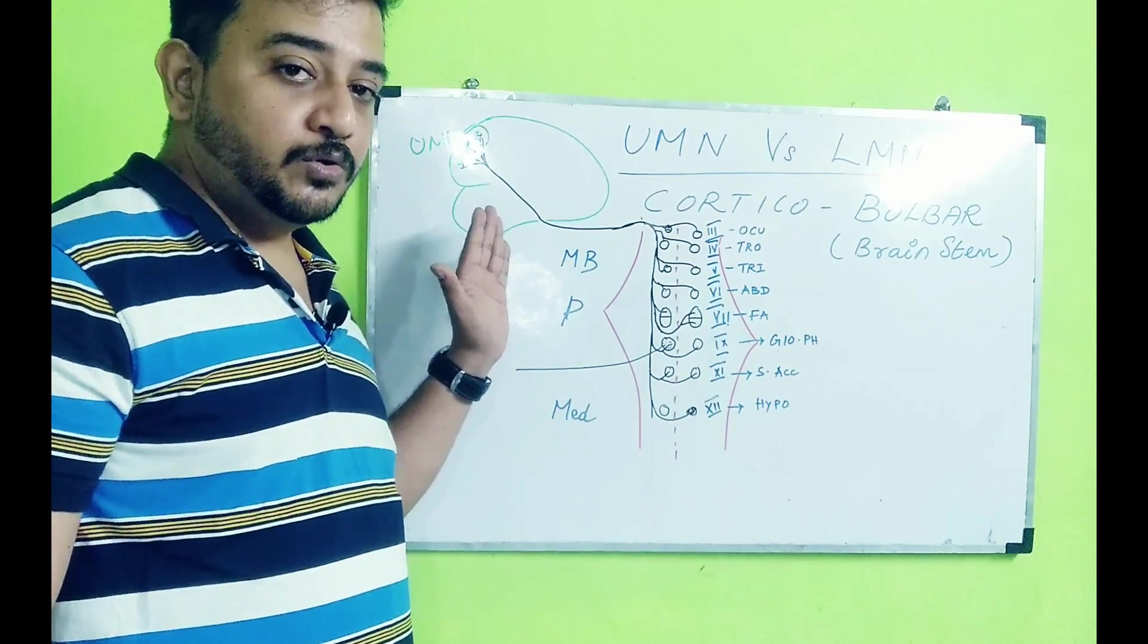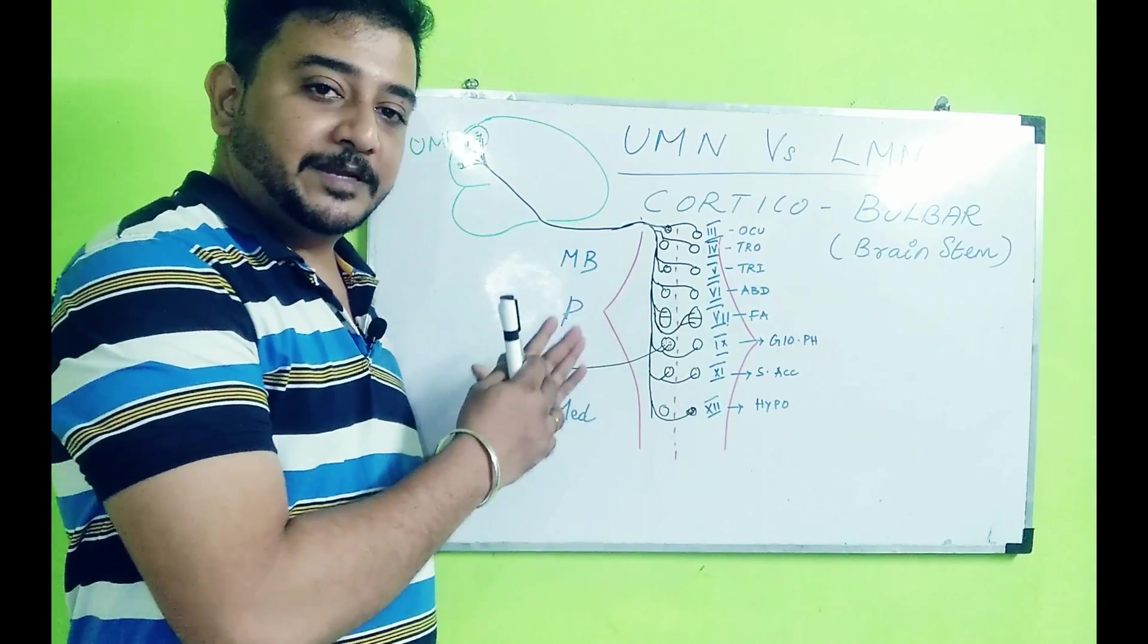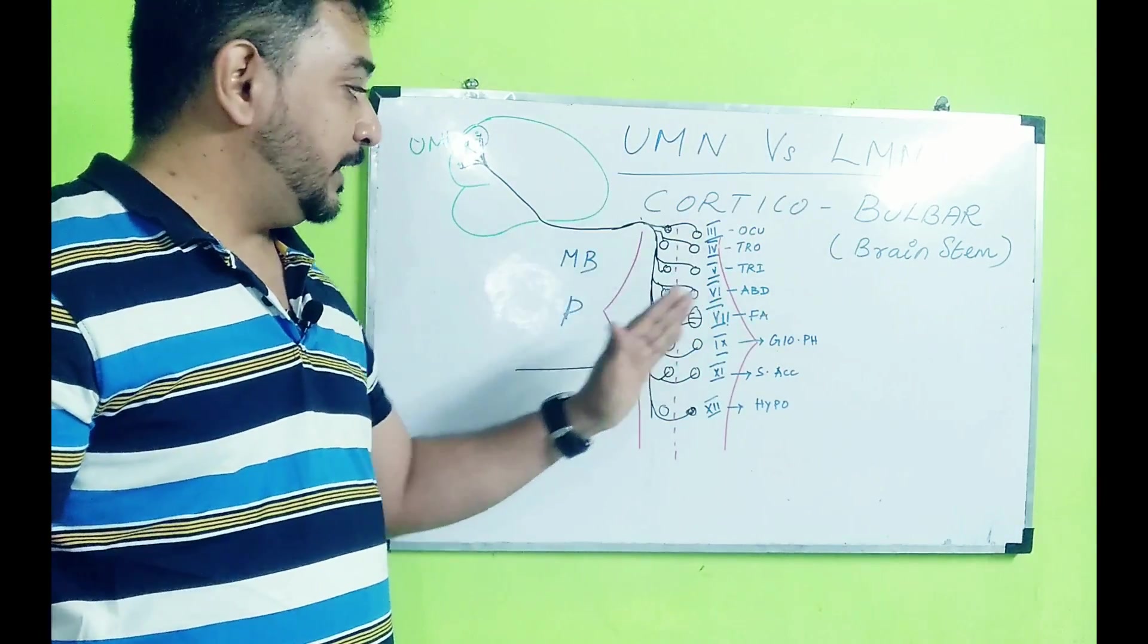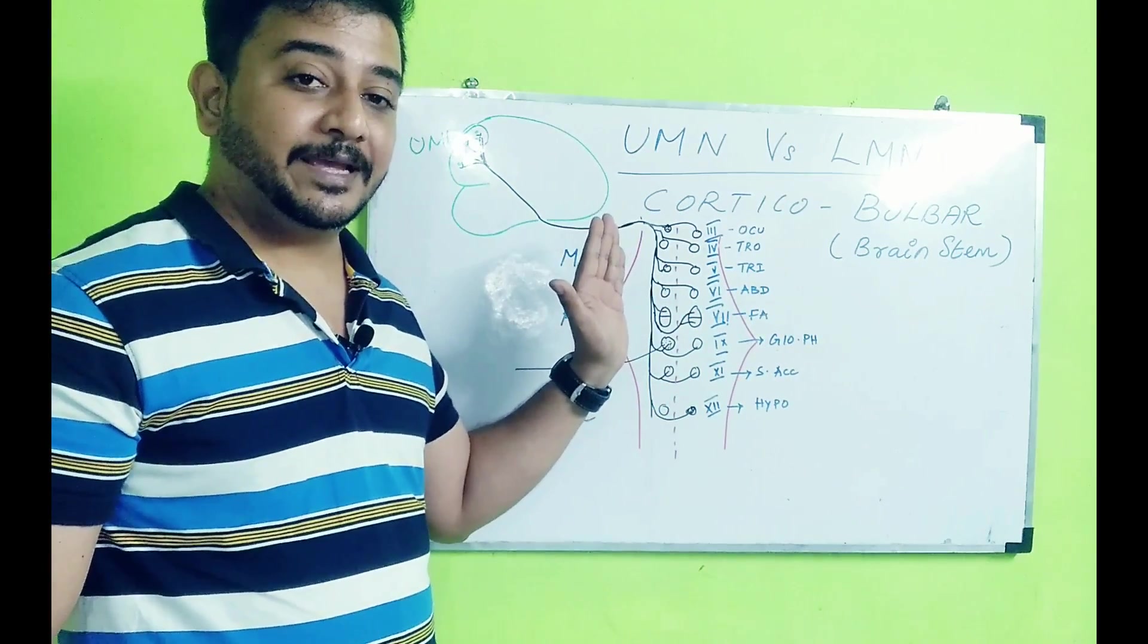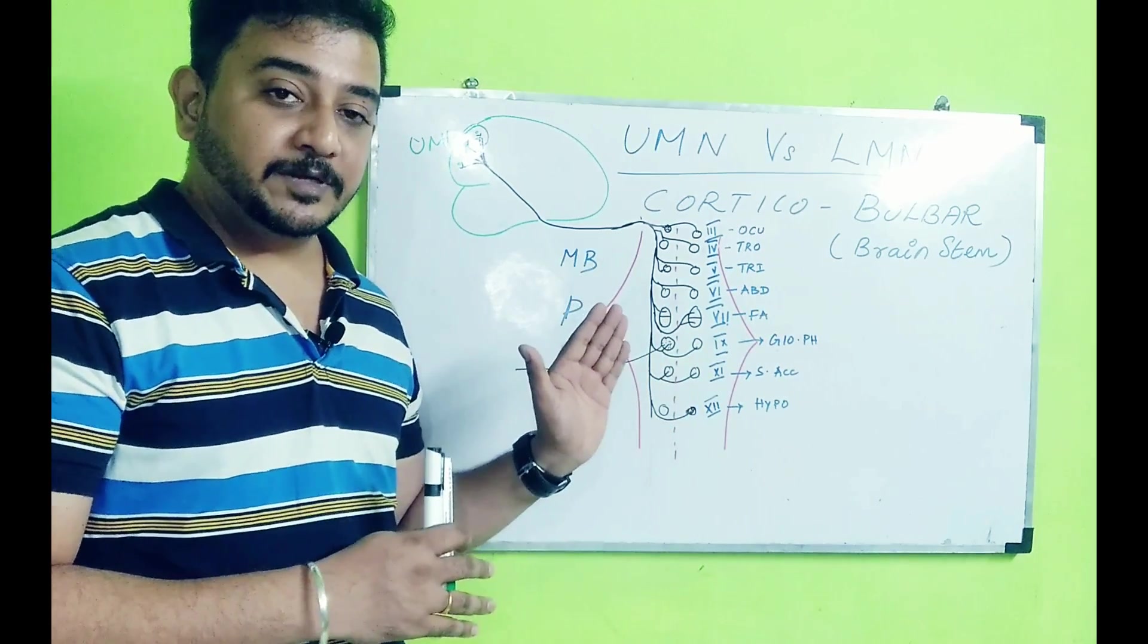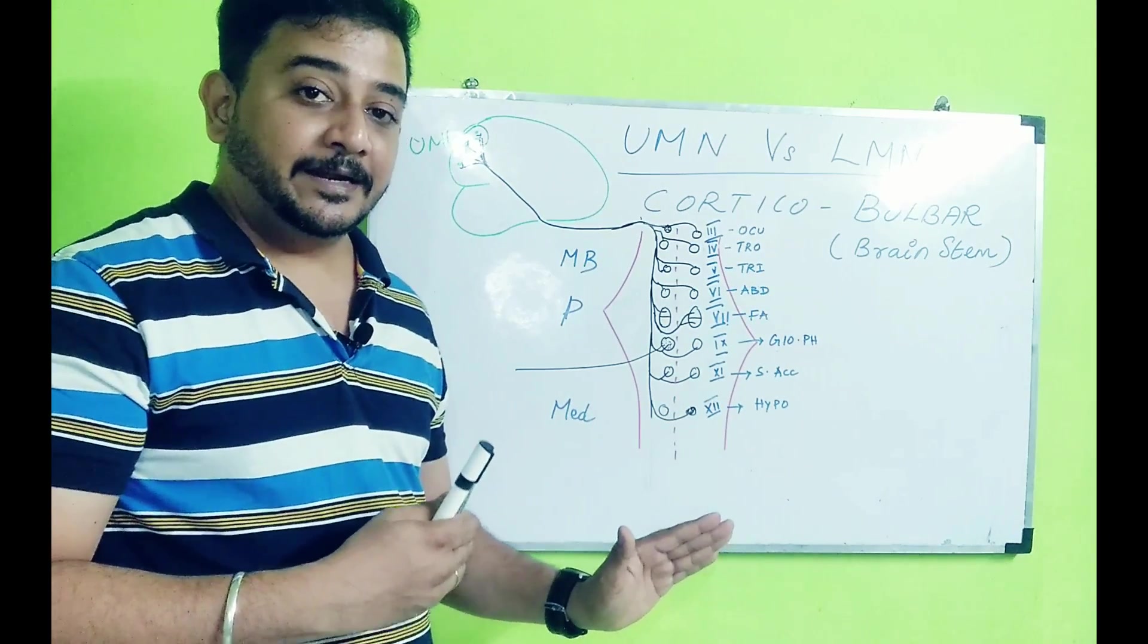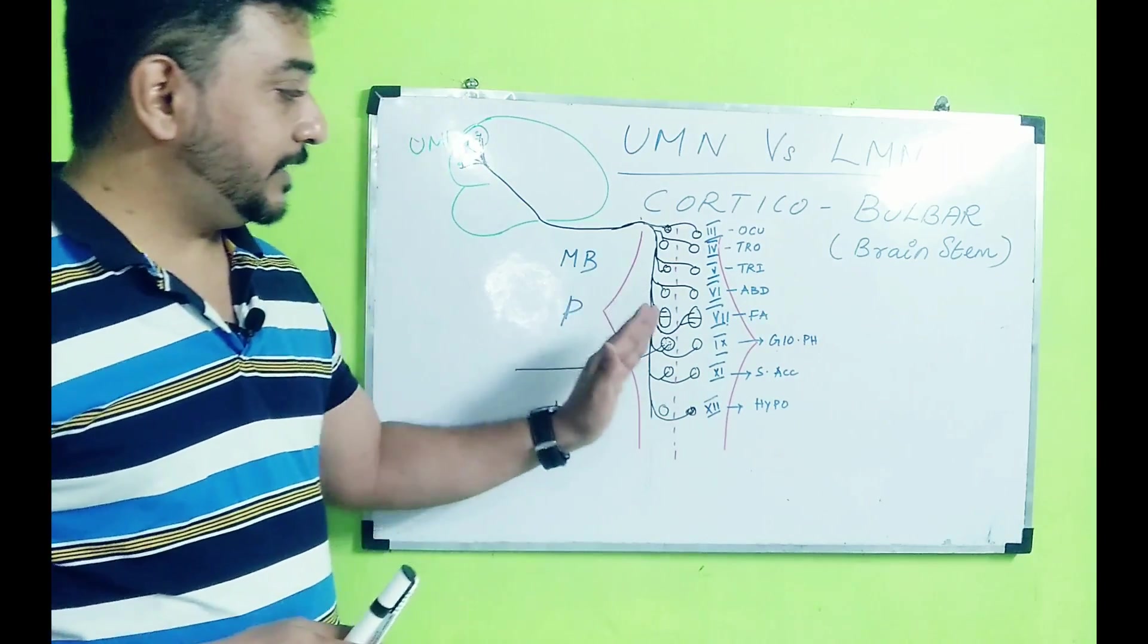The corticobulbar tract does not predominantly innervate the opposite side. 50% of the nerve fibers remain on the same side and 50% of the nerve fibers go to the opposite side. This is applicable to the other side also. So the crossing over takes place 50% only, the 50% remains on the ipsilateral side. Whereas in the corticospinal tract, 85% to 87% of the nerve fibers cross onto the opposite side and only 10 to 12% of the nerve fibers remain on the ipsilateral side.